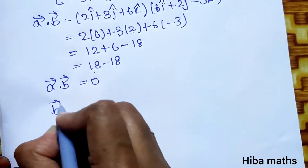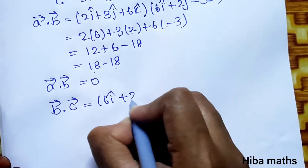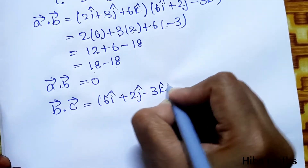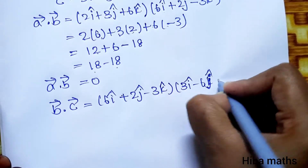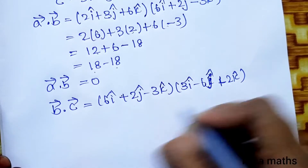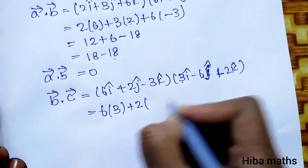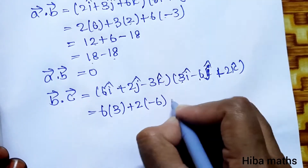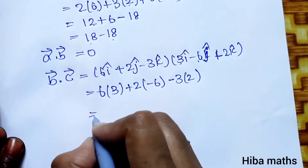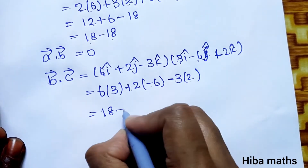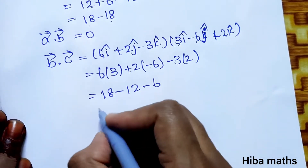Now B vector dot C vector: (6i plus 2j minus 3k) into (3i minus 6j plus 2k). Multiplying: 6 into 3, plus 2 into minus 6, plus minus 3 into 2. That gives 18 minus 12 minus 6, which equals 0.